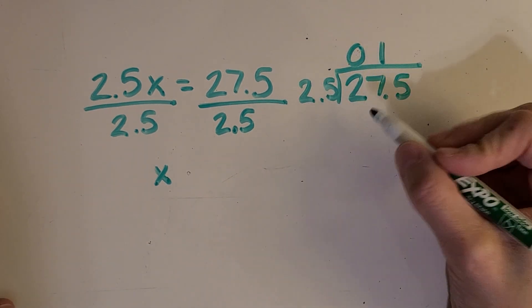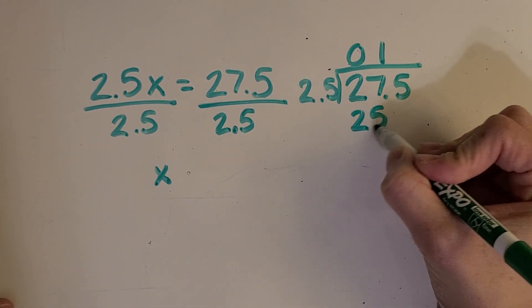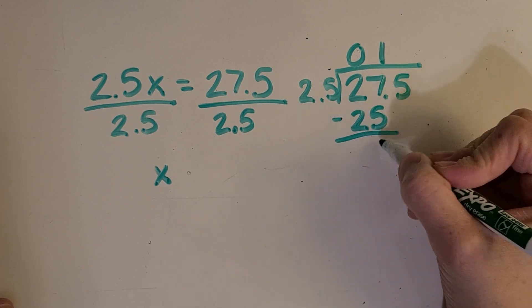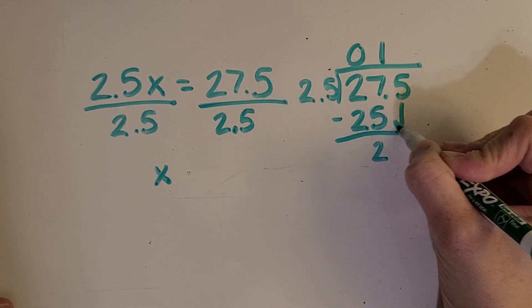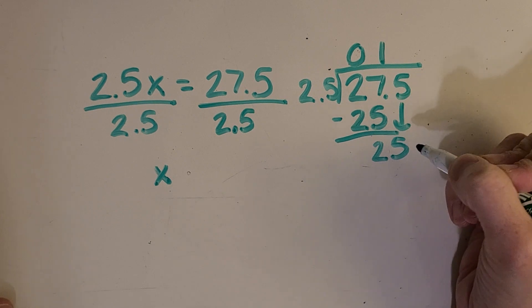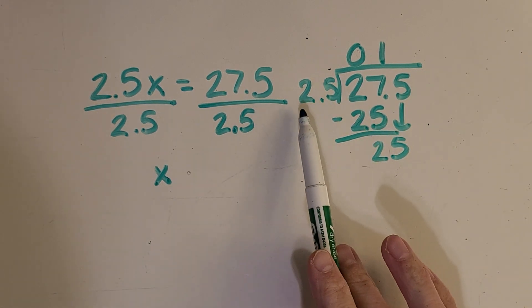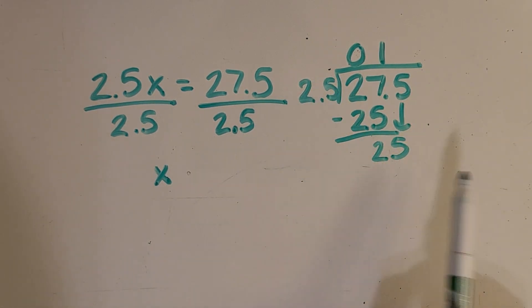So 25 times 1 is 25. Subtract. Bring down. And then, this one's a pretty easy one. How many groups of 25 can I make with 25?